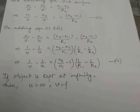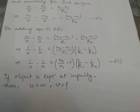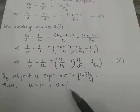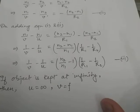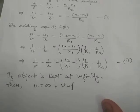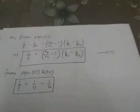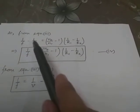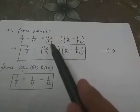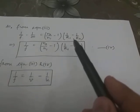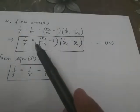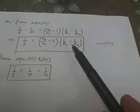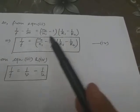Special case: whenever an object is kept at infinity in front of a convex lens, the image is always formed at the focus. So placing U equals infinity and V equals F in equation number three, we get 1/F minus 1/infinity equals (N2/N1 minus 1)(1/R1 minus 1/R2). Since 1/infinity equals zero, this gives 1/F equals (N2/N1 minus 1)(1/R1 minus 1/R2), which is the first form of the lens maker's formula. Let this be equation number four.